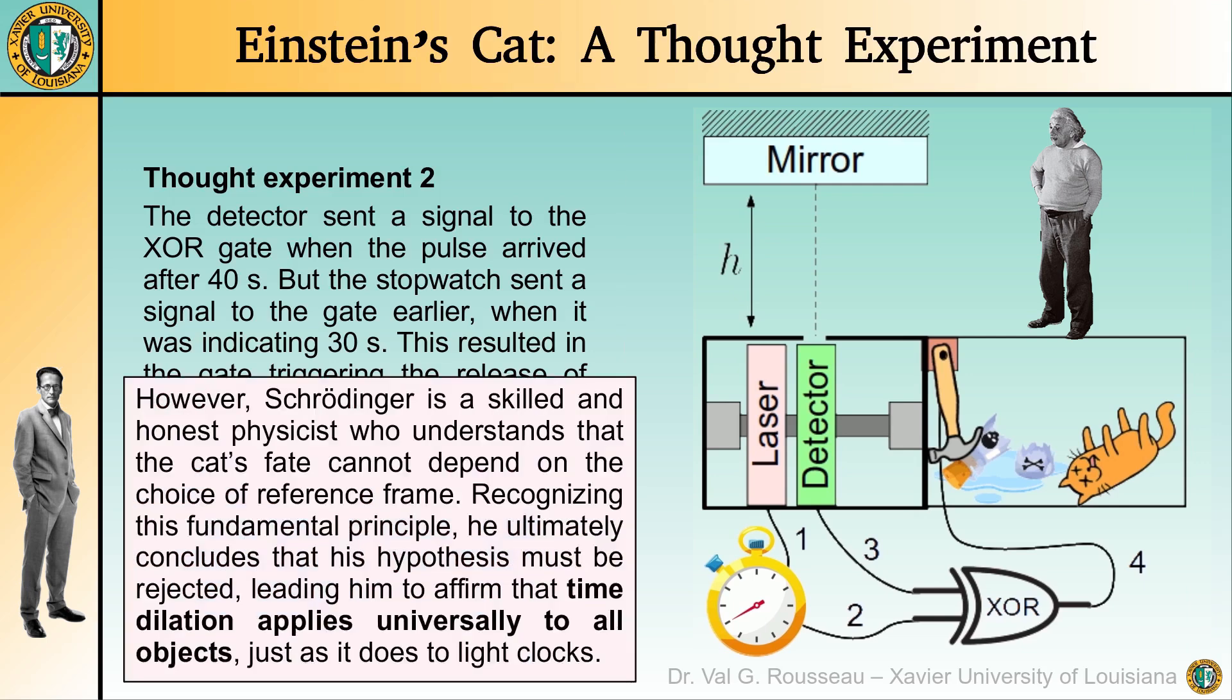Fortunately, Schrodinger is a reasonably good physicist and he knows that the fate of Einstein's cat cannot depend on the choice of reference frame. He then concludes that his hypothesis is incorrect and must be rejected. Ultimately, he concludes that time dilation applies universally to all objects, just as it does to light clocks. And once again, anti-relativists have been proven wrong.